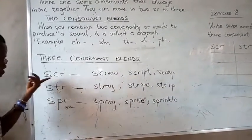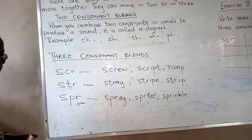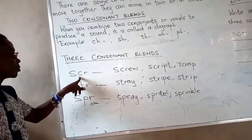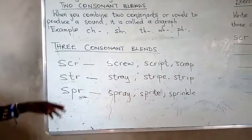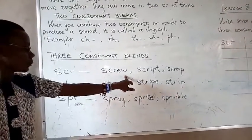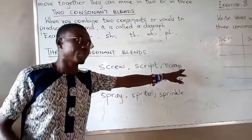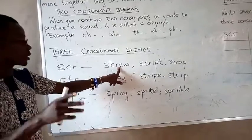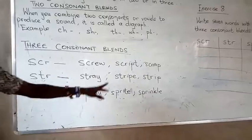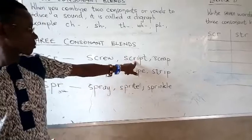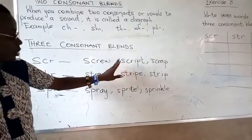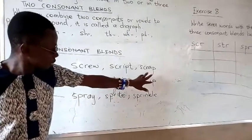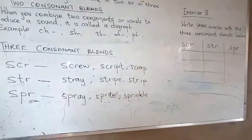These three consonants — S, C, R — always move together in the formation of words. Immediately you see S, the next letter to follow is C, and after C, R also shows its face. So SCR, as in 'screw' and 'scrap.' You will observe that in spelling, S, C, R follow in that order, plus the other letters which can be a mixture of vowels and consonants. The first three are consonant letters, then plus the other letters.